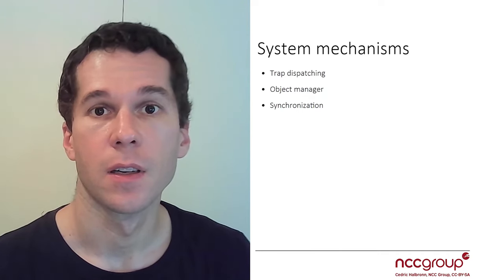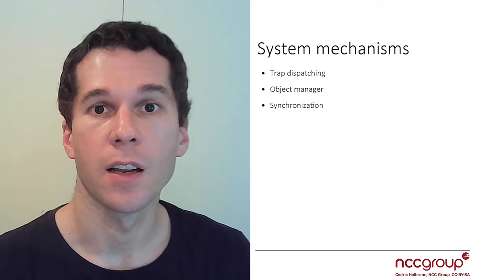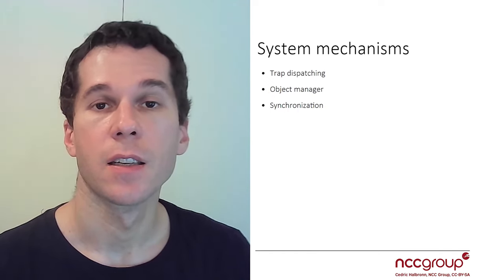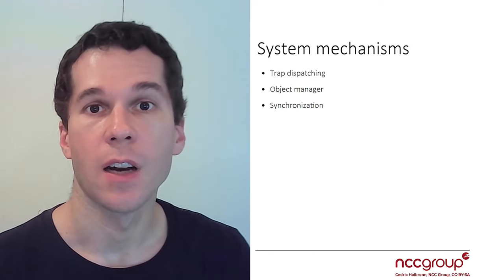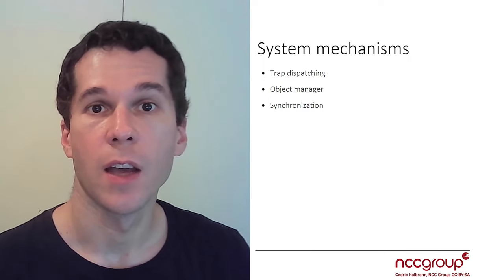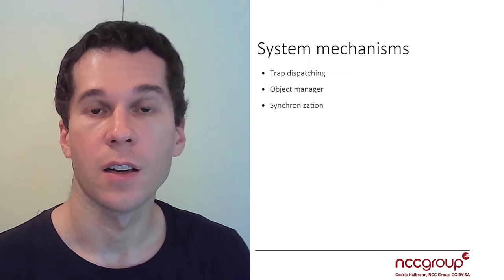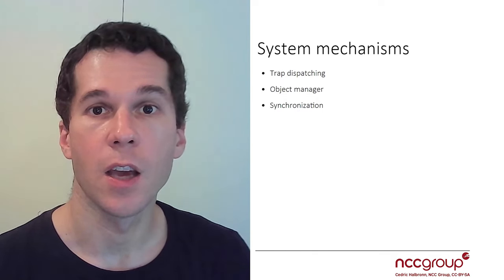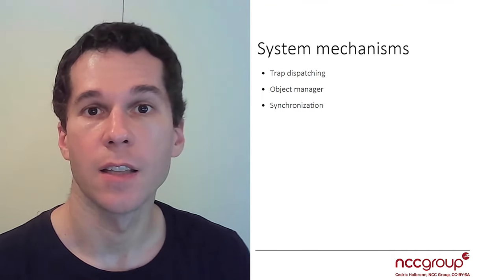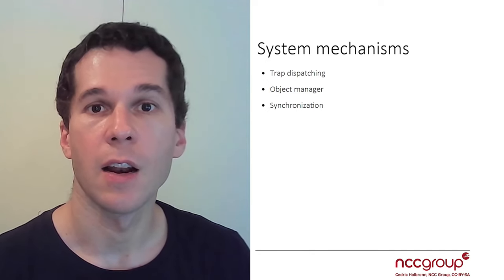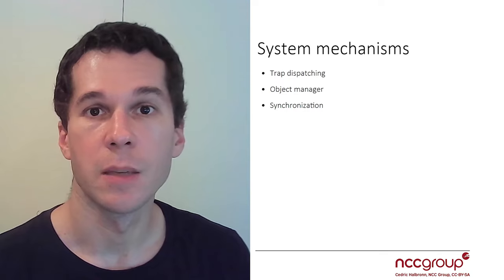In this part we're going to look at system mechanisms. We'll look into different kernel tables that give us information on where system calls are implemented, where exceptions are handled, and where some memory regions are accessed. Then we'll look into APCs, which are a way to execute code asynchronously into threads, and IRQLs, which define what can or can't be done in the kernel from an exploitation point of view. Then we'll look at the object manager and different synchronization mechanisms.